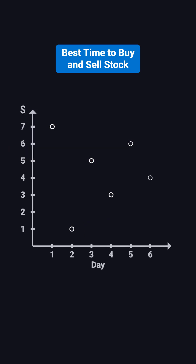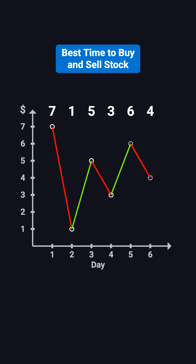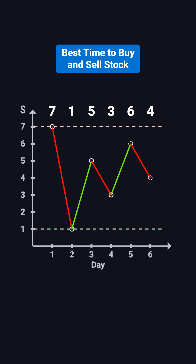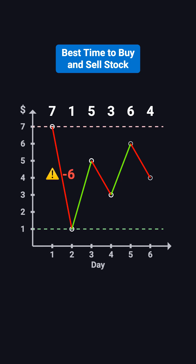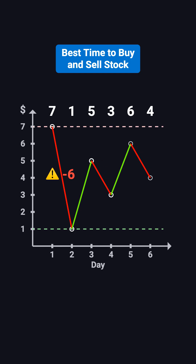For example, the prices are 7, 1, 5, 3, 6, 4. At first glance, the biggest gap looks like 7 minus 1, which is 6. But that's a trap. Prices drop from 7 to 1, and you must buy before selling. If you buy at 7 and sell at 1, you lose 6 instead of making 6.